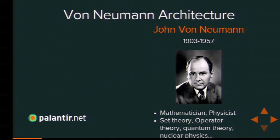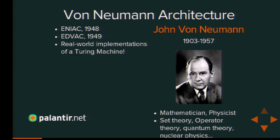Let's fast forward to World War II and shortly thereafter. Another crazy smart mathematician named John von Neumann — for whom mathematics was just kind of his side hobby; he also worked on set theory, quantum theory, nuclear physics, and was on the Manhattan Project — was also a consultant on ENIAC, one of the very first electronic computers, and on EDVAC. Both of these systems, under his guidance, were essentially implementations of the Turing machine. They took the stateful approach, and this architecture became known as the von Neumann architecture.